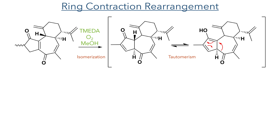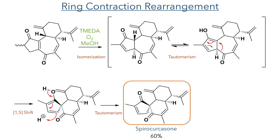With these Quercusones in hand, they could then be transformed into other members of this family. Two of these transformations could be carried out by reacting tetramethylethylenediamine with oxygen gas in methanol. The first rearrangement starts with an isomerisation of the alpha-beta unsaturated ketone, moving the double bond away from the bridge between the five and seven-membered rings. This ketone undergoes tautomerisation allowing a 1,5-shift to occur, causing a ring contraction together with the formation of a new carbon-carbon bond and a spirocyclic ring junction. This dienol then undergoes another tautomerisation to revert back to an alpha-beta unsaturated ketone, completing the synthesis of Spiro Quercusone in a 60% yield.